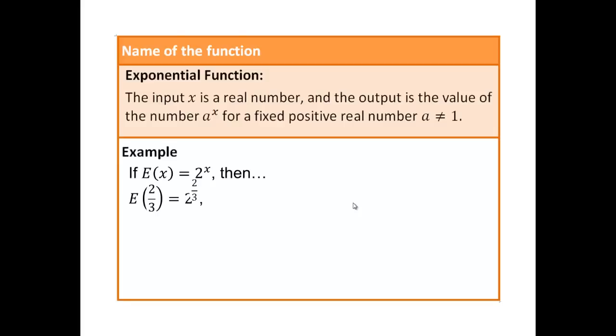So then we're going to have e of 2 thirds is going to equal 2 to the power 2 thirds. e of 100 would be 2 to the 100. e of negative 3,456 would be 2 to the power of negative 3,456. e of a plus h would be 2 to the power a plus h. So just see how every time we replace this x with something, it goes and takes place of the exponent. That's what the exponential function is.